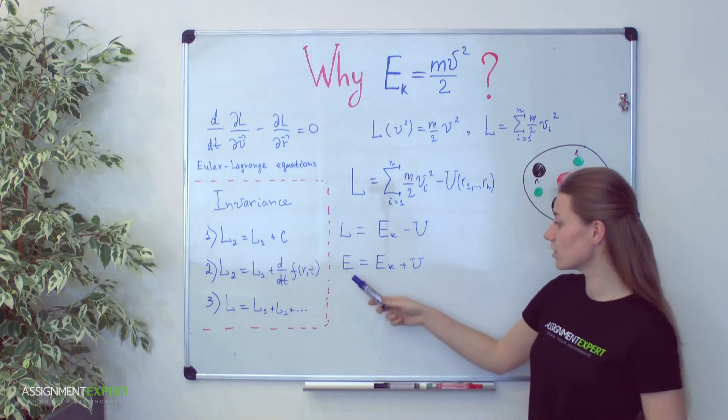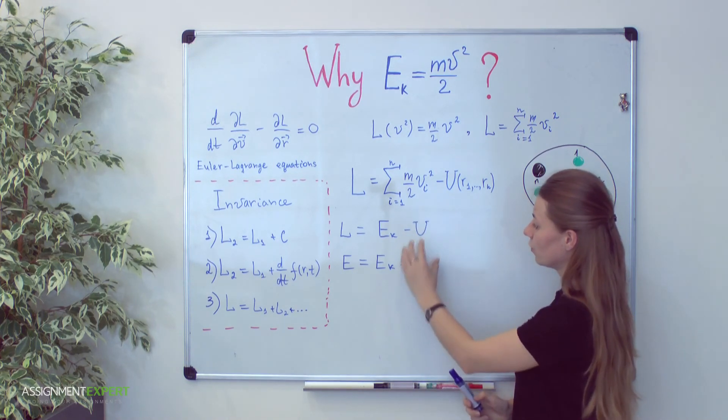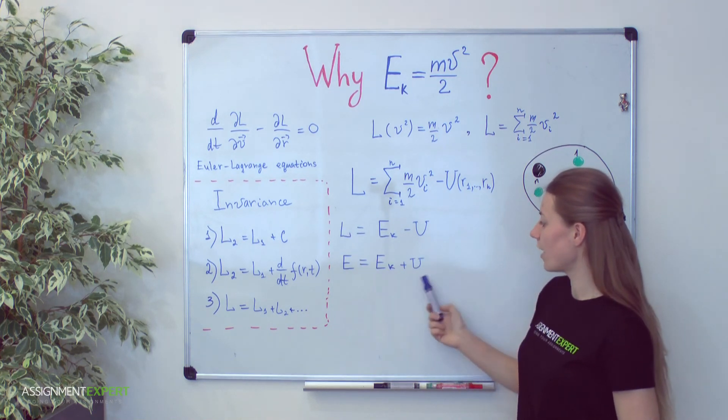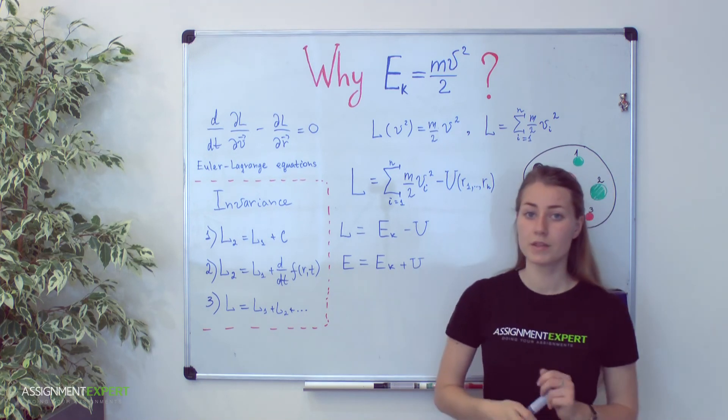Third, our Lagrange function coincides with the energy of a system when potential energy u is zero. But in general, we can't associate Lagrange function with the full energy of a system because of this additional term. And the last,